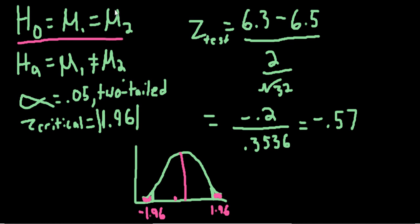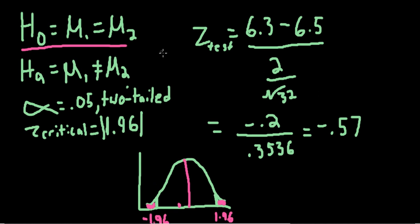We reserve judgment, and for the time being, we say that there is no detected difference between the population mean and the mean from which our sample population was derived. We are not able to reject the null hypothesis.